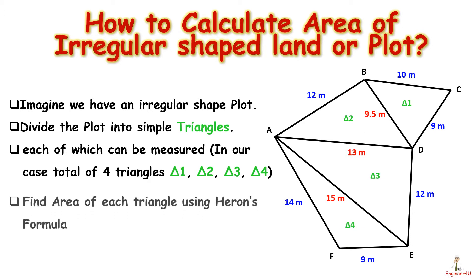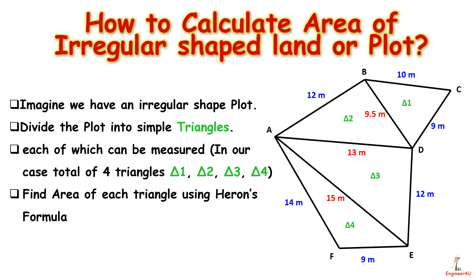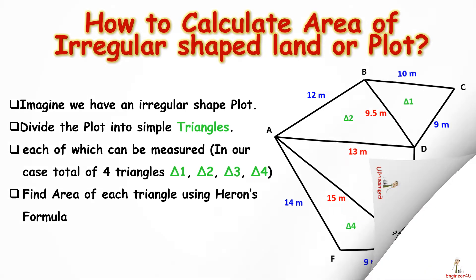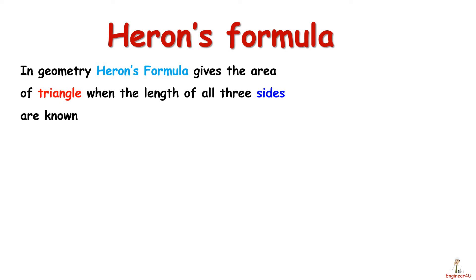Now find area of each triangle using Heron's formula. In geometry, Heron's formula gives the area of a triangle when the length of all three sides are known.